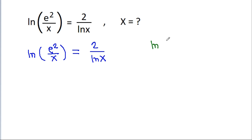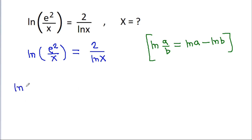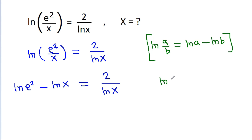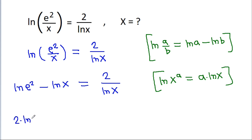We use the property that ln(a/b) equals ln(a) minus ln(b). So it becomes ln(e²) minus ln(x) equals 2 divided by ln(x). Then applying ln(x^a) equals a times ln(x), it becomes 2 times ln(e) minus ln(x) equals 2 divided by ln(x).